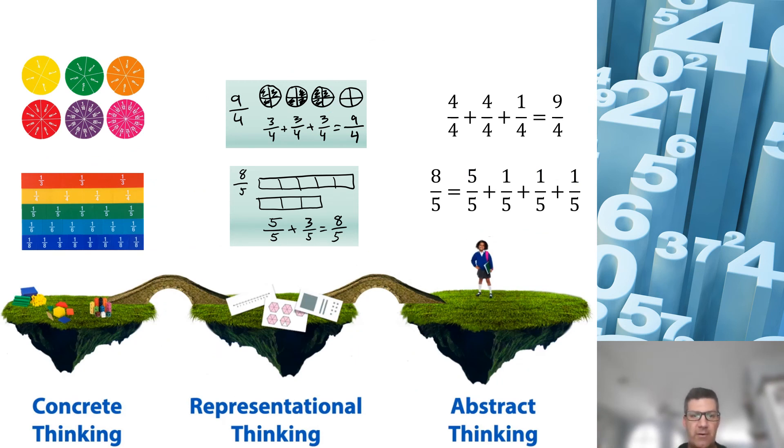Here's our CRA islands. Remember, all of these things should be happening together. That students are building what they can touch and move around to then represent what those would look like with pictures. And right alongside it, always writing that abstract representation so that they're connecting them all together in their brains.